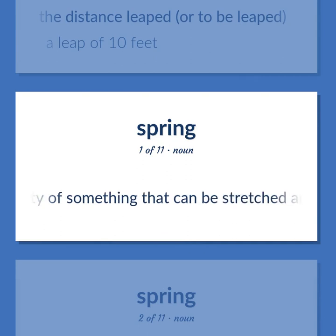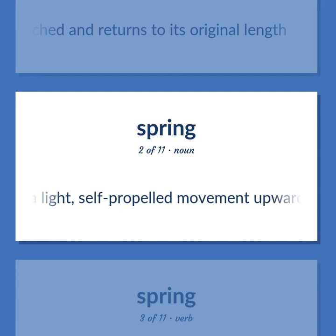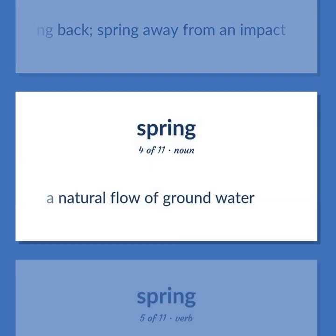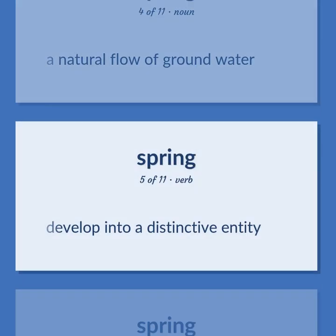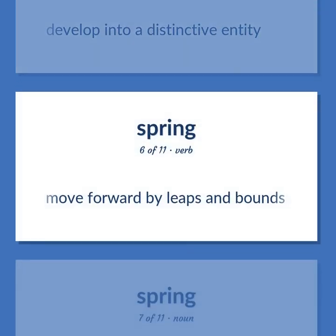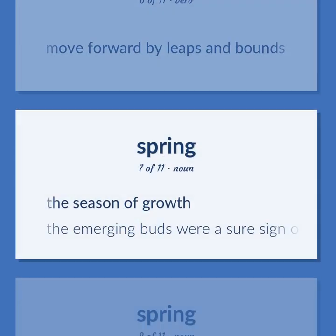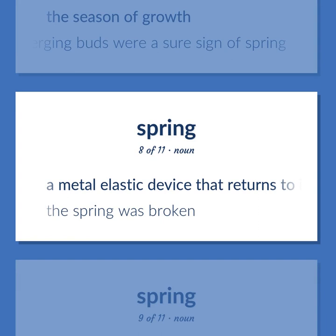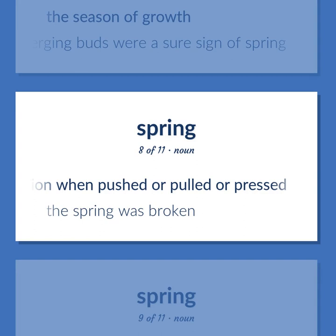Spring: The elasticity of something that can be stretched and returns to its original length. A light, self-propelled movement upwards or forwards. Spring back; spring away from an impact. A natural flow of groundwater. Develop into a distinctive entity. Move forward by leaps and bounds. The season of growth — 'The emerging buds were a sure sign of spring.' A metal elastic device that returns to its shape or position when pushed or pulled — 'The spring was broken.'